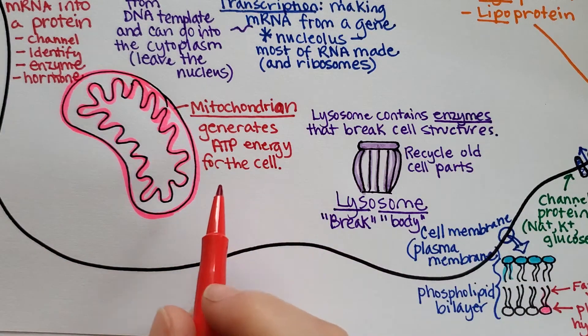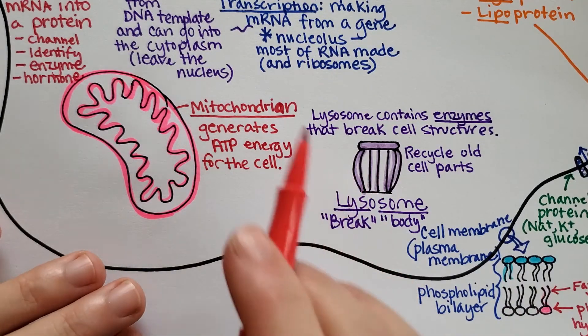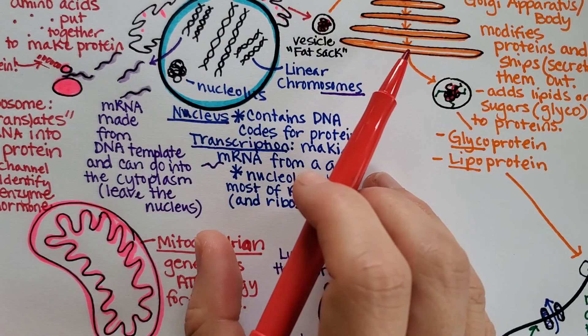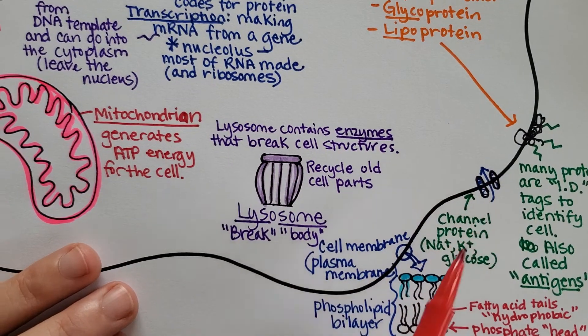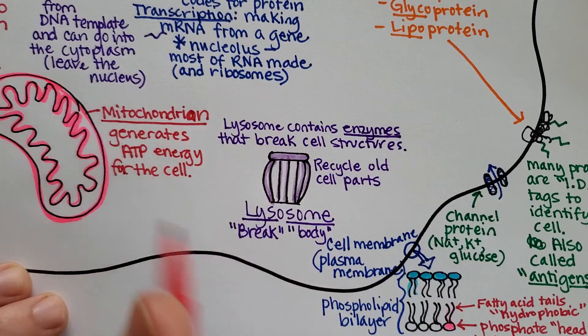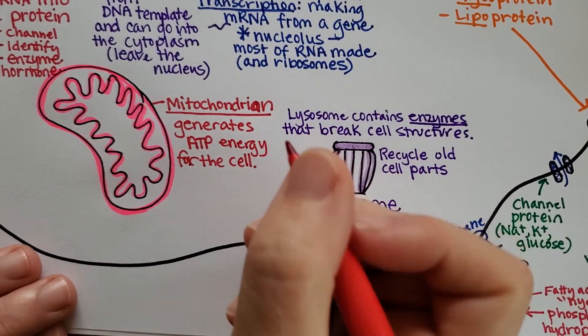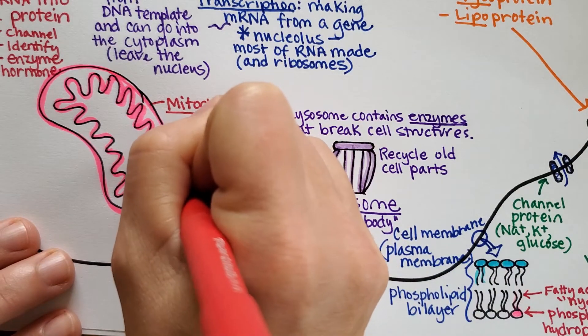So this generates ATP energy for the cell. And then that energy is used to do all kinds of things like open and close a lysosome or move something through the Golgi or pump things in and out of the cell.